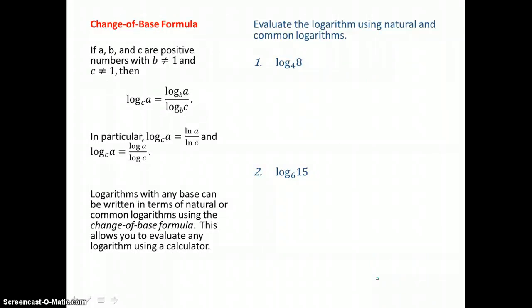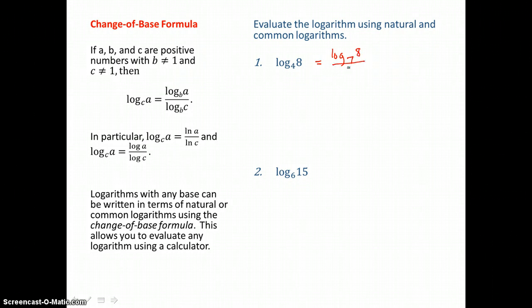On this page, we're going to use the change of base formula to evaluate logarithms. Log base c of a equals log base b of a over log base b of c, so we can write any log as the quotient of another log. In particular, log base c of a equals ln of a over ln of c, and also equals log of a over log of c. We use natural log and common log because those are available on our calculator. For example, log base 4 of 8 can be written as log base 7 of 8 over log base 7 of 4 — but that's not helpful since log base 7 isn't on our calculator.